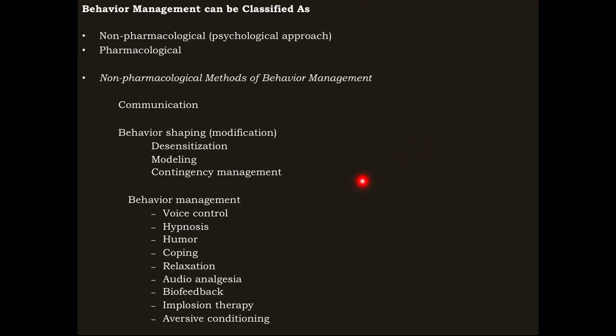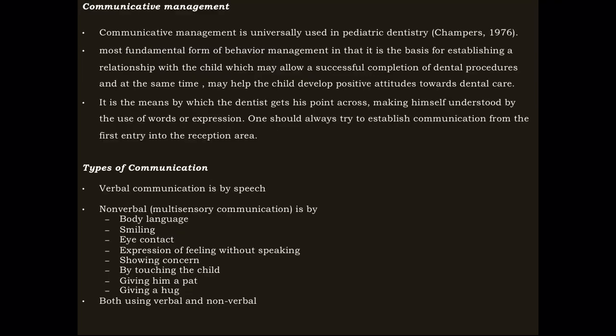This slide is very, very important. You should know which technique is part of which class. Desensitization, modeling, and contingency management come under shaping and modification. In shaping and modification, the behavior is modified. In behavior management, more aggressive measures are taken. Communicative management is the most fundamental form of behavior management. There are different types of communication: verbal by speech; non-verbal which is multisensory communication including body language, smiling, eye contact, giving a hug, and showing concern; or a combination of both.